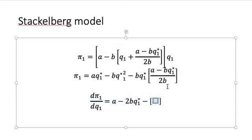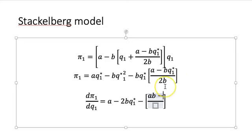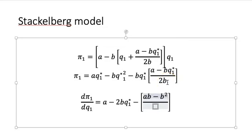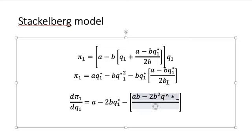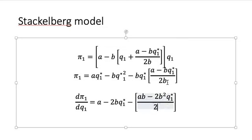We can just stick with the bracketed term. When I multiply this back in here, I'll get another fraction with 2B as a constant, so that doesn't matter. So we have AB minus 2B squared Q1 star over 2B. Set it equal to 0.